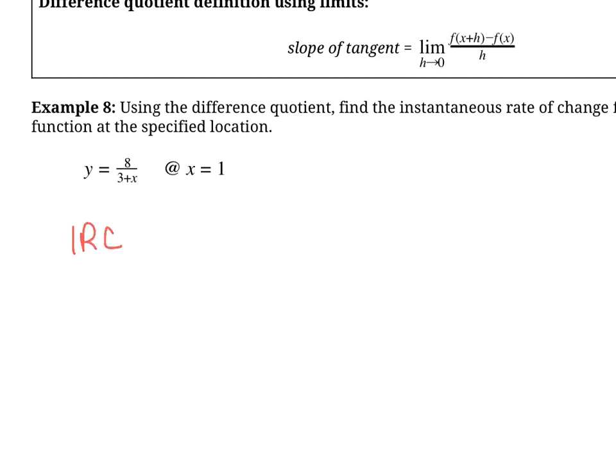So IRC is going to equal the limit as h approaches zero of f at x plus h minus f at x over h. So again, we've got to plug in our values. This limit thing has to stay here. We haven't used the limit part yet. h goes to zero of f at x plus h.